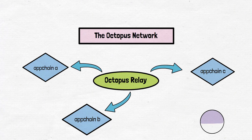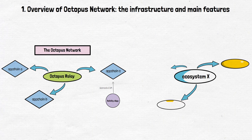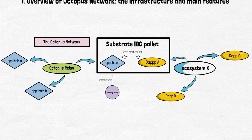Besides Octopus Relay, there are two crucial frameworks: Barnacle EVM and Substrate IBC. Octopus Network's Barnacle EVM is a Substrate-based Ethereum Virtual Machine that allows dApps written in Solidity to be easily deployed as app chains in the Octopus Network. The Octopus Network Substrate IBC pallet allows developers to create Substrate-based blockchains that interact in a trust-minimized way via the secure exchange of assets and data between ecosystems.